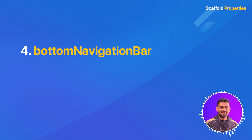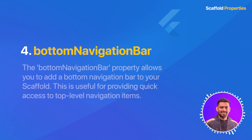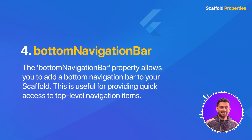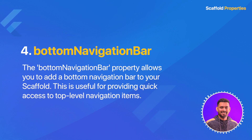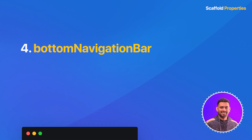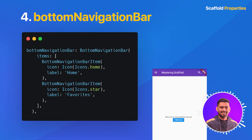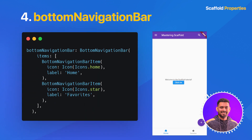Number five: bottom navigation bar. The bottom navigation bar property allows you to add a bottom navigation bar to your scaffold. This is useful for providing quick access to top-level navigation items. In this example, we have added a bottom navigation bar with two items: home and favorites.